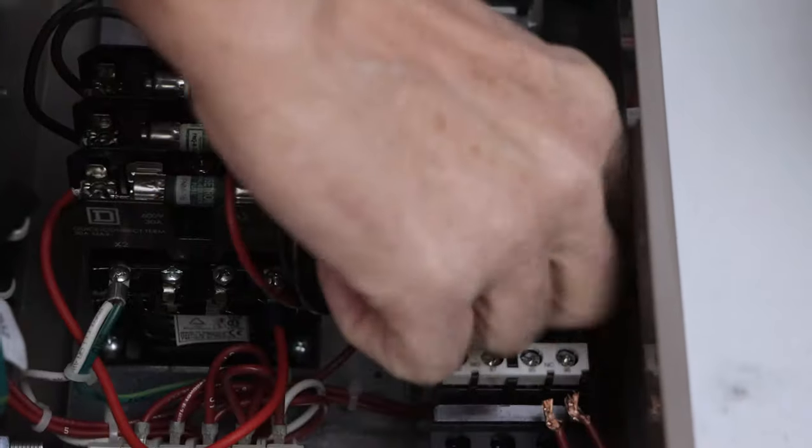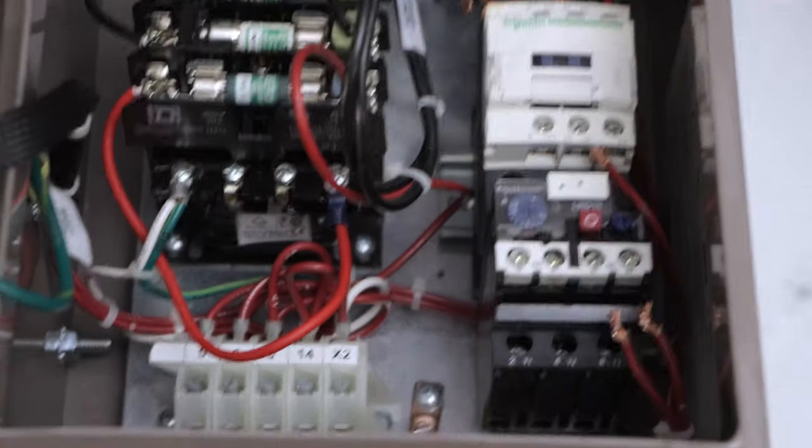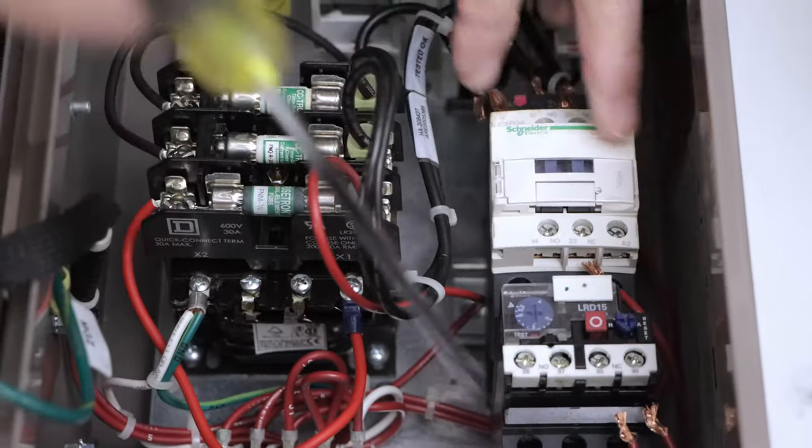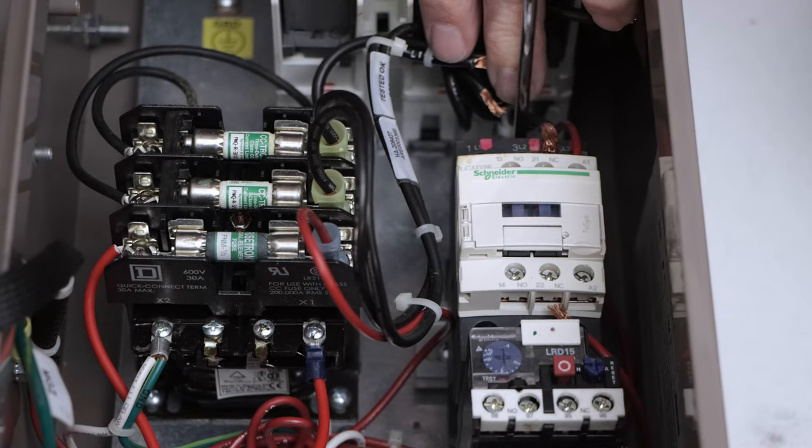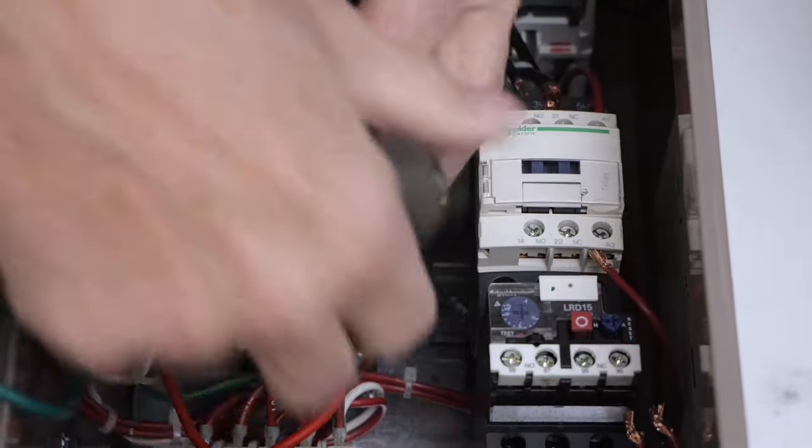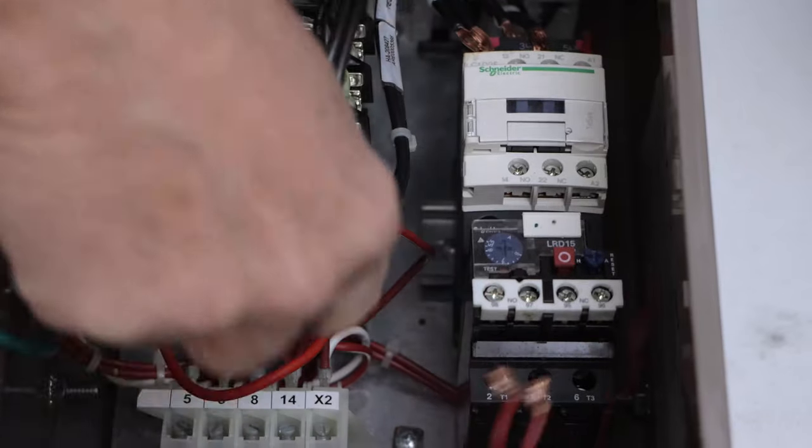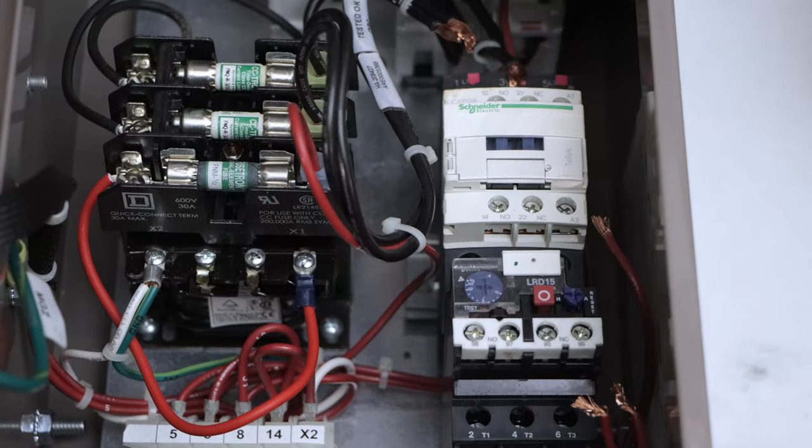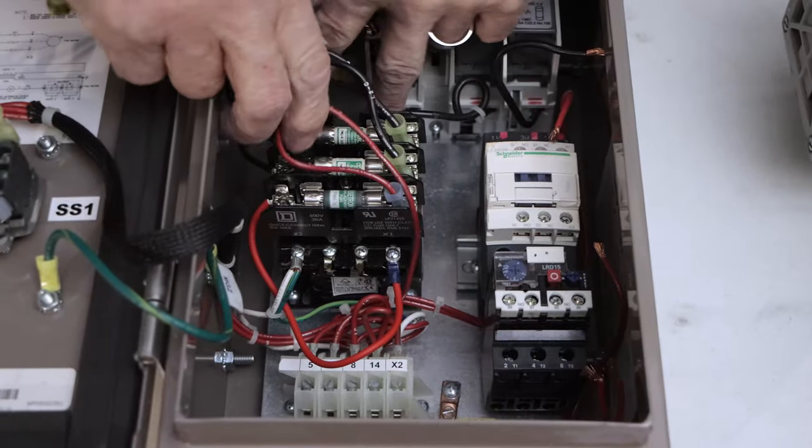Okay, we get these out of here, we get this out of here, and there we go. Now we just have the starter, and the starter should have a release back here to get off of this piece of DIN rail. Let's take a look at the starter.